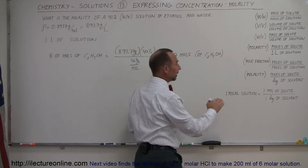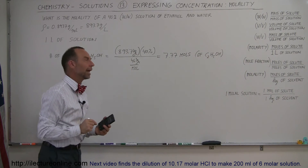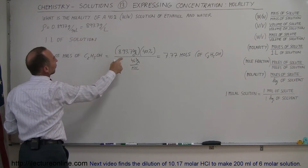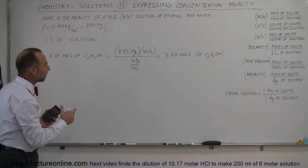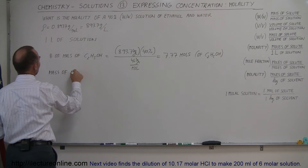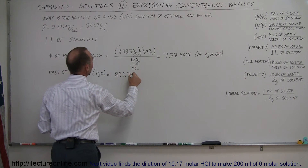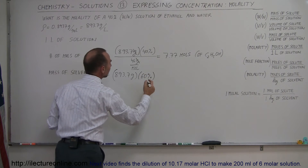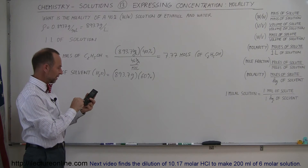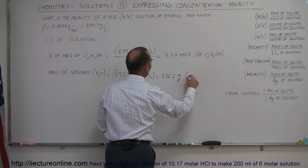For molality, we need the number of moles of the solute divided by the number of kilograms of the solvent. So now we need to know how much solvent we have. In one liter of solution we have 893.7 grams total. Of that, 40 percent is the mass of the ethanol, so the remaining 60 percent is the mass of the water. The mass of the solvent (water) equals 893.7 grams times 0.6, which gives us 536.2 grams of water.